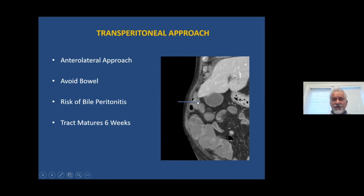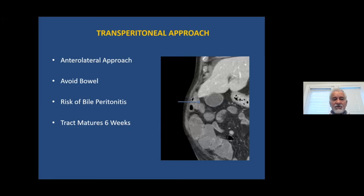You want to avoid bowel interposition because if you do that, you not only perforate the bowel and cause spillage of bowel contents into the peritoneal cavity, but also risk leakage into the peritoneal cavity. The other issue is that it takes about six weeks for the tract to mature before you can take the catheter out. Cholecystostomy is actually a temporizing procedure — it's not curative.